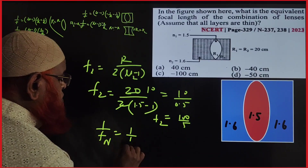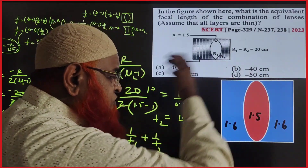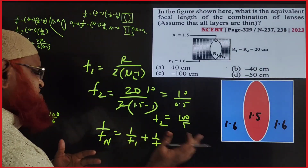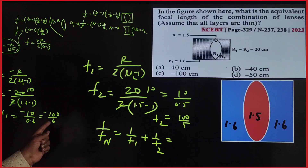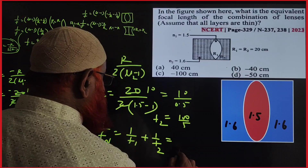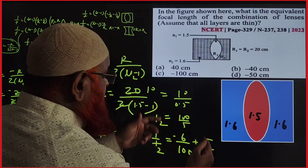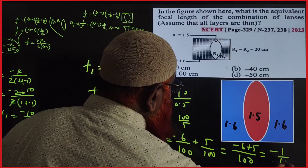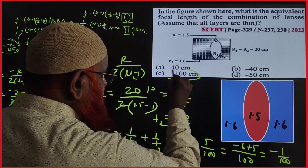When you join these three lenses, the net focal length is given by 1/f_net = 1/f1 + 1/f2. Here f1 = −100/6 and f2 = 100/5, so 1/f_net = −6/100 + 5/100 = −1/100. Therefore the net focal length is −100. That's it — so simple!